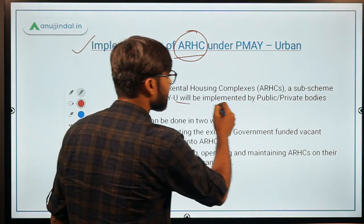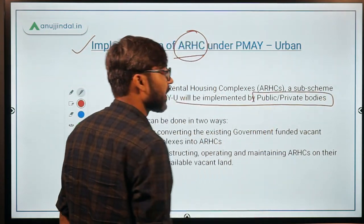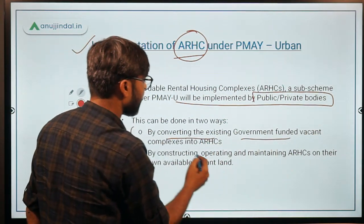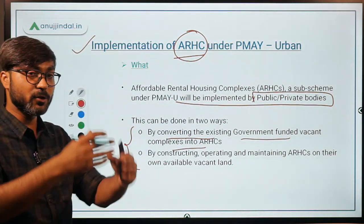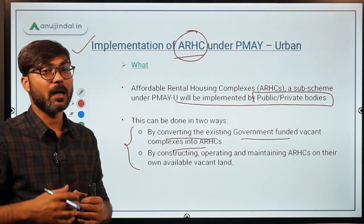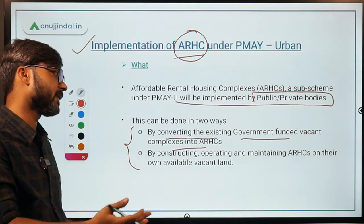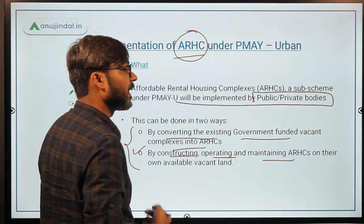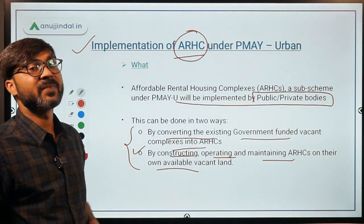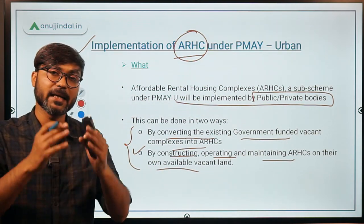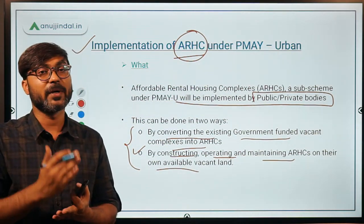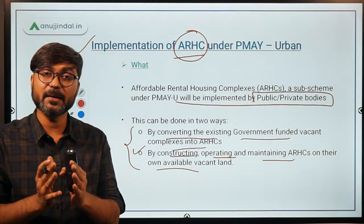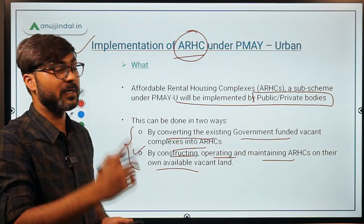It will be implemented by public-private bodies in two ways: first, by converting existing government-funded vacant complexes into ARSCs; second, by constructing, operating and maintaining ARSCs on their own available vacant land. So either the government's existing vacant houses can be converted into ARSCs, or new ARSCs can be built and operated on available vacant land.